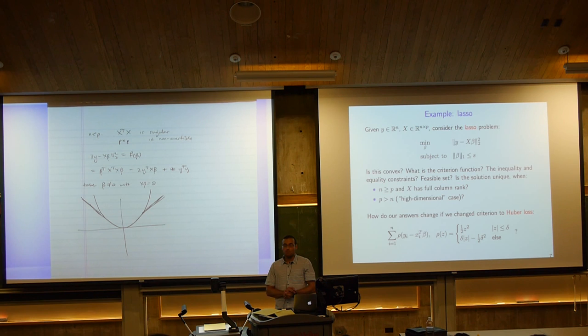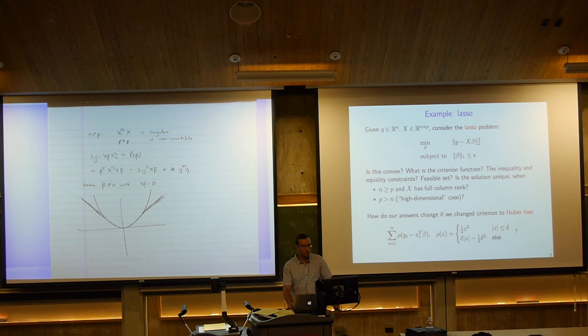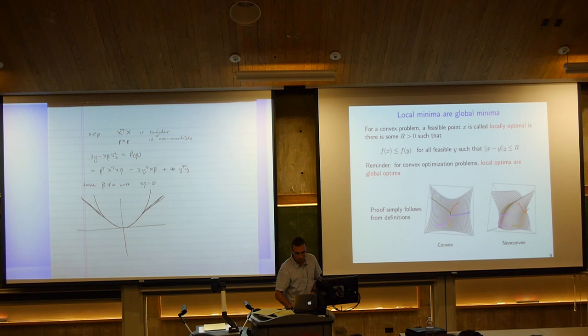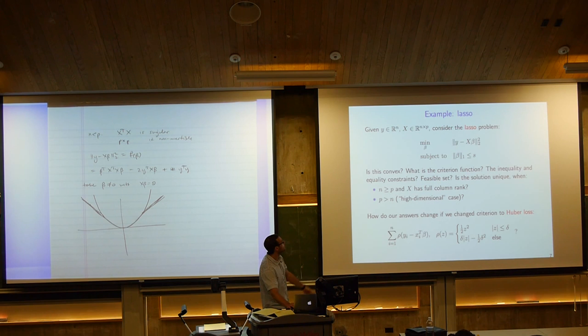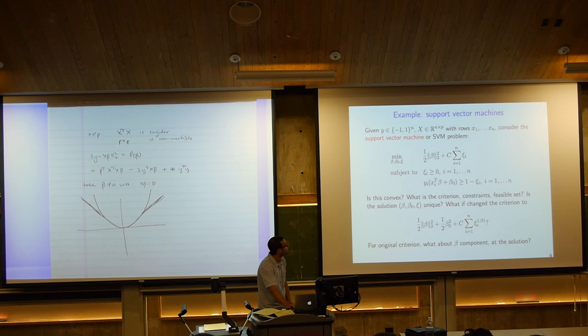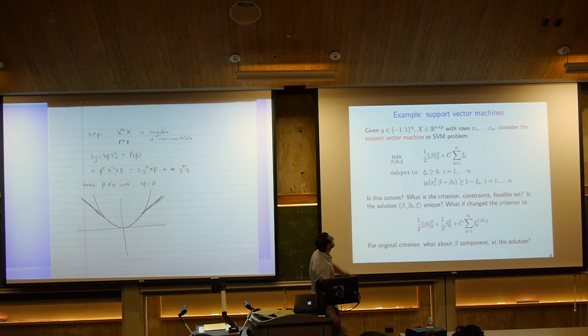Now let's discuss SVMs. Support vector machines are a popular problem in machine learning — a way to produce a linear classification function, where the decision boundary is linear in the variables. We have an N×P matrix of variables, and Y is a vector of ±1 labels.